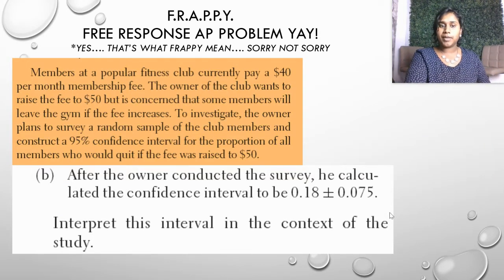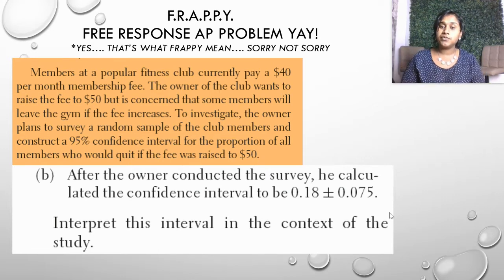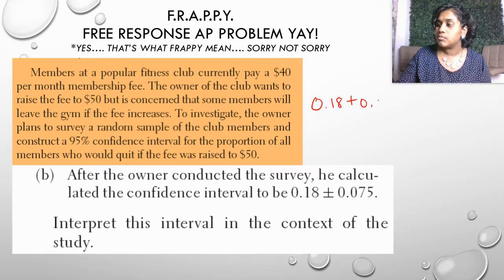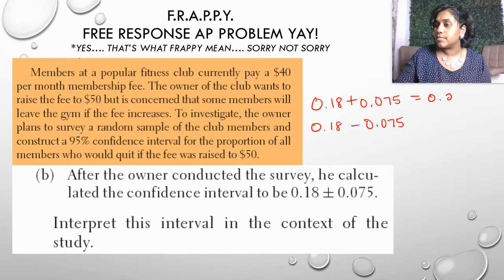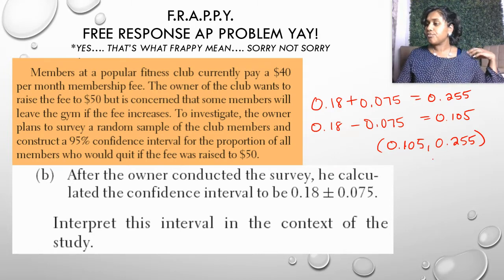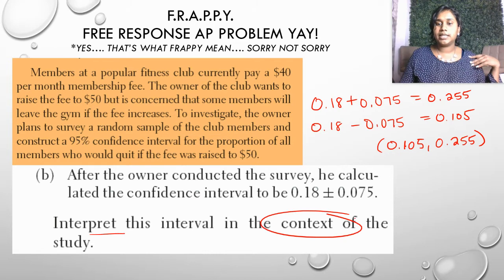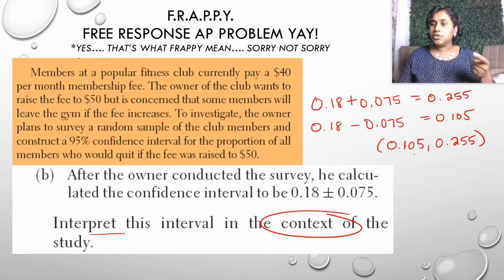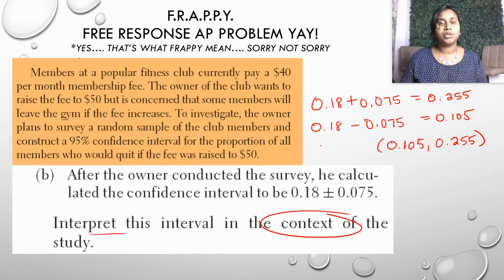Part B: After the owner conducted the survey, he calculated the confidence interval to be 0.18 plus or minus 0.075. Interpret this interval in the context of the study. We do a bit of math here and find the interval from 0.105 to 0.255. I would be 95% confident that the interval 0.105 to 0.255 captures the true proportion of all members who would quit if the fee was raised to $50.